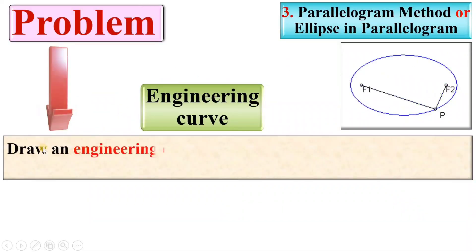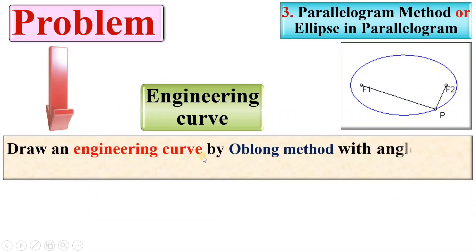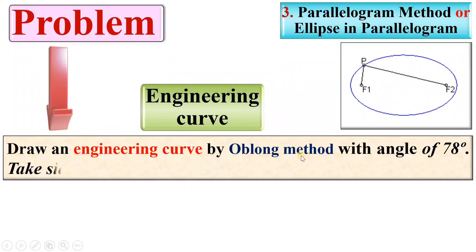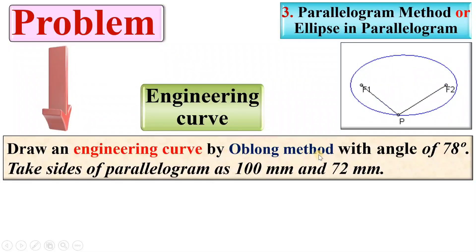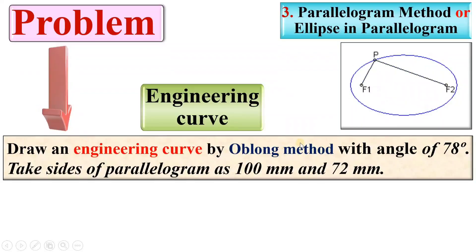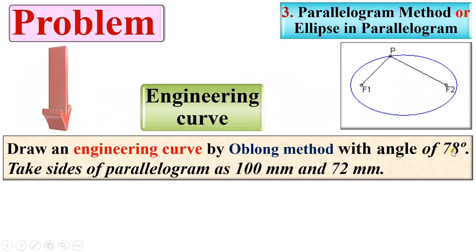Let's see first of all the description: draw an engineering curve by oblong method. This method is sometimes known as the oblong method because the steps of the rectangle method and oblong method are almost similar to the parallelogram method. Sometimes it is also known as the oblong method, with an angle of 78 degrees.